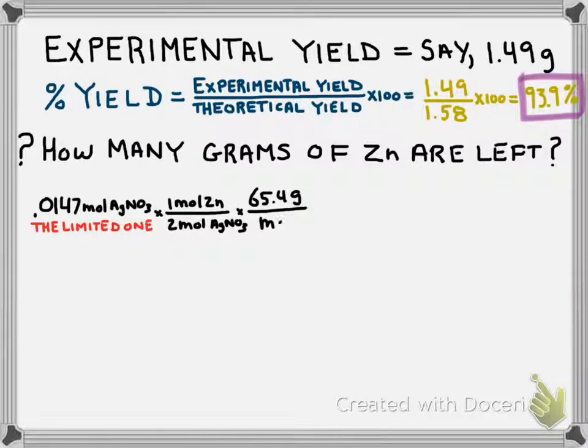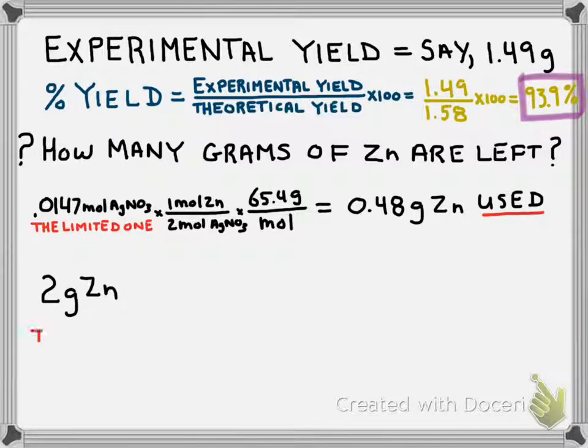And finally, if we multiply that number times the molar mass of zinc, this will give us the grams of zinc that are actually used in the experiment. So, these are going to go away. They go into forming some zinc nitrate. So, now that we have the grams of zinc that are being used, we're going to subtract that from the amount of zinc that we started out with in the very beginning.